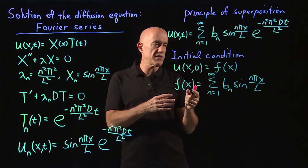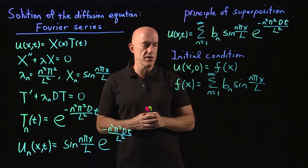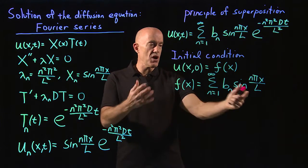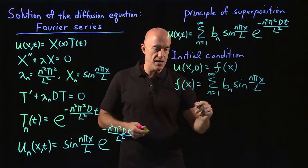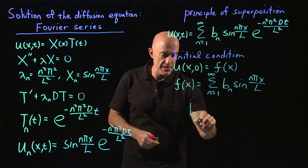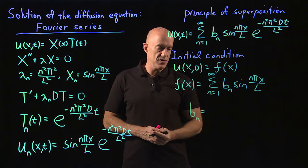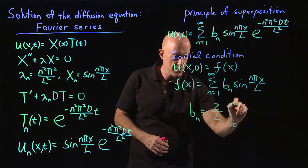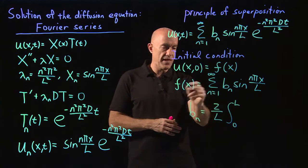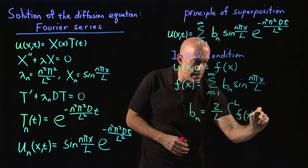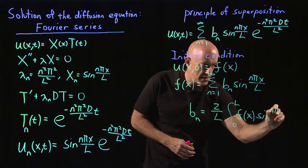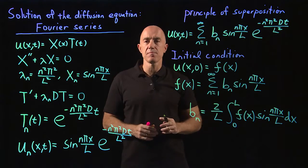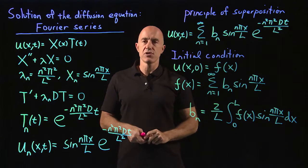In fact, Joseph Fourier invented Fourier series because he needed it in the final solution of a PDE. From Fourier series analysis, we know that b sub n equals 2 over L times the integral from 0 to L of f(x) times sine(n*pi*x/L) dx. And that completes the solution of the diffusion equation.